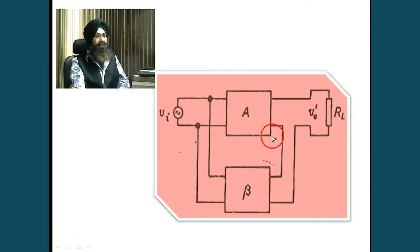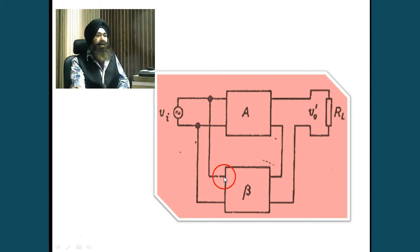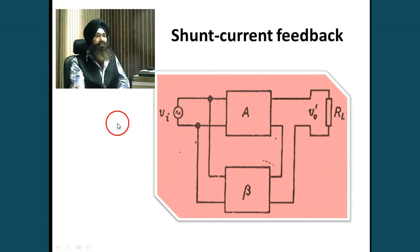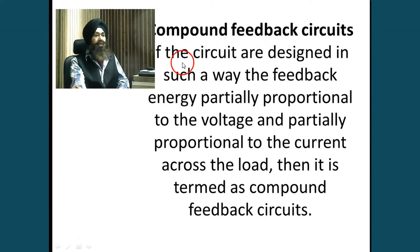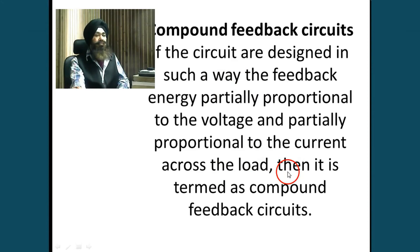In current feedback circuits, the output signal is proportional to the output current. There are two types: series current feedback, where the current is taken back from one line and applied in one line (series); and shunt current feedback, where the current is taken back from one line but applied between two lines (shunt). In compound feedback circuits, the feedback energy is partially proportional to the voltage and partially proportional to the current — a mixing of the two — which is why it is called compound feedback.